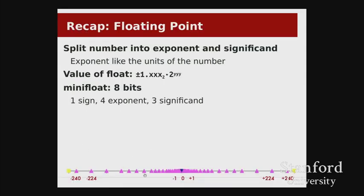Just a recap of what we talked about with floats last time: we introduced the floating point number system. The key insight was that rather than representing a number as a single decimal number, we split the number into two pieces. One piece is the significant figures part — the significand — which is a 'one point something' piece represented in binary. The other piece is the exponent, a power of two, just like scientific notation uses a power of ten.